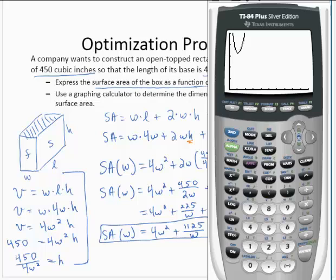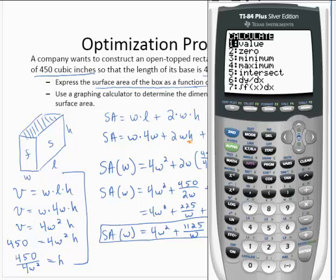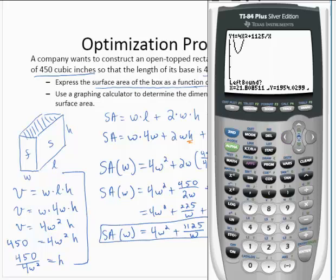All right. And so from my surface area function I do see a minimum value. Let me go ahead and calculate it. Minimum. All right. Let's scroll to the left until we see our point into play. There it is. All right. And so now I'll use the minimum command to calculate it.